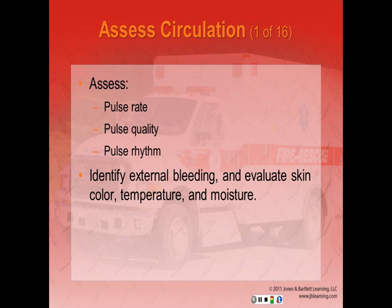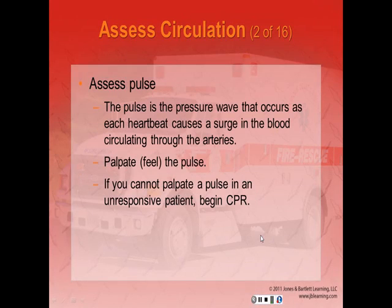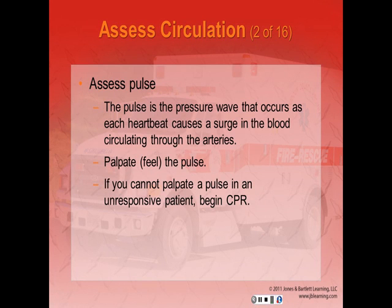Circulation is evaluated by assessing pulse rate, quality, and rhythm, just as with breathing. The pulse is the pressure wave that occurs as each heartbeat causes a surge of blood circulating through the arteries. We also identify external bleeding and evaluate skin color, temperature, and moisture. To determine if the pulse is present, palpate or feel it. For responsive patients older than one year, palpate the radial pulse at the wrist. For unresponsive patients, palpate the carotid pulse at the neck. For anyone under one year old, palpate the brachial pulse, located at the inside part of the upper arm.